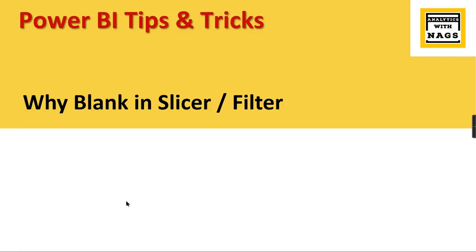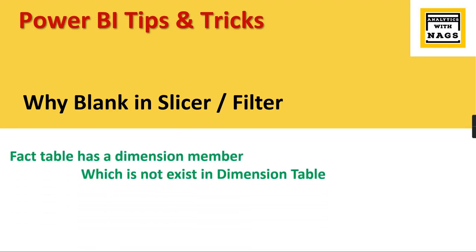Welcome to Analytics with Nax. In this video we're going to talk about why blank appears in your slicer or filter. The answer is a single-liner: if your fact table has a dimension member which does not exist in the dimension table, then a blank will appear. This is the only reason for it. If you are not familiar with fact and dimension tables or modeling, let's check it out in an example.